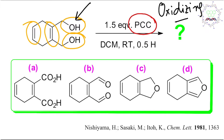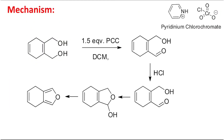This reagent is actually very mild and selective. That's why you can see DCM — more specifically, anhydrous DCM at room temperature for 0.5 hours — it will selectively produce a carbonyl derivative. That is the uniqueness of PCC. But this problem is a little different, so let's learn this mechanism.